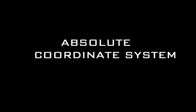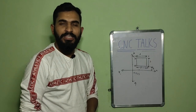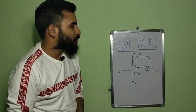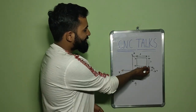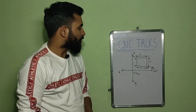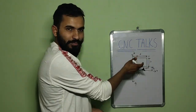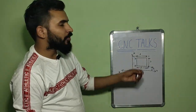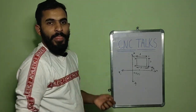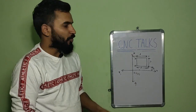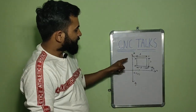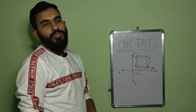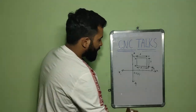Let's take an example of a cube and solve it using the absolute coordinate system. As you can see, there is a cube A, B, C, D with each side 3 mm. Also, this cube is 2 mm from the x axis and also 2 mm from the y axis. Now let's find out the coordinates of each of its corners. The coordinates of point A will be the distance on x axis and distance on y axis. The distance of point A on x axis is 2 mm and on y axis is also 2 mm. So the coordinates of point A will become 2 and 2.